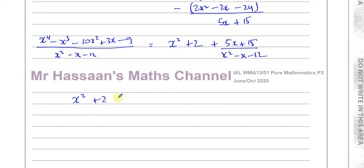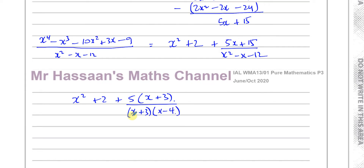We can factorize this and simplify it. So you can write this as x squared plus 2, and this is going to be plus 5 times x plus 3 over — and this factorizes into x plus 3 and x minus 4. That gives you x squared minus x minus 12. And the x plus 3's will cancel, so you're now left with x squared plus 2 plus 5 over x minus 4.